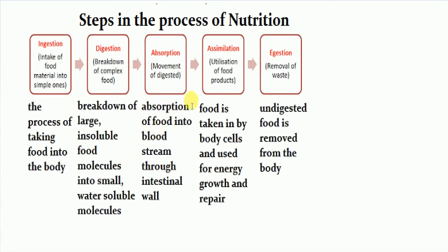The next step is absorption. The digested food is now converted into small water-soluble molecules, which can be transferred through the intestinal wall into the bloodstream. The process of transfer of food through the intestinal wall into the bloodstream is called absorption. The next step is assimilation — the absorbed food is taken to different parts of the body by the blood, where it enters each and every cell of the body and is utilized to get energy and for growth and repair. This process is called assimilation.